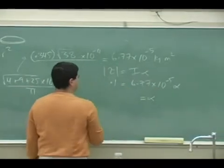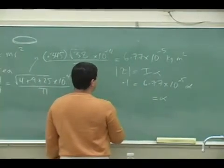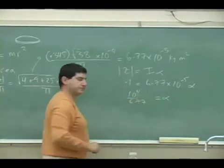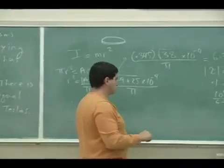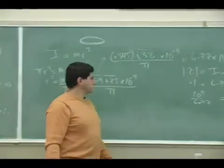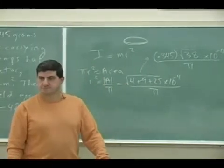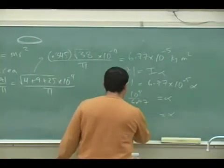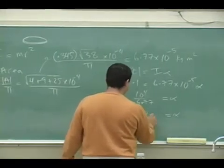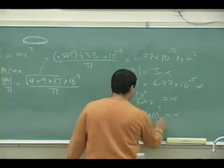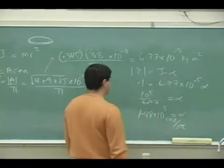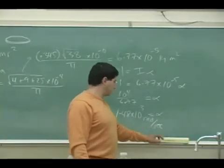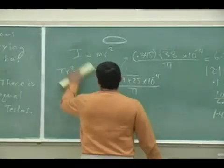So 10 to the fifth, it's going to be 10 to the fourth divided by 6.77. 1.48. That's radians per second squared, 1.48. So 1,480 radians per second squared. That coil is going to turn like crazy.